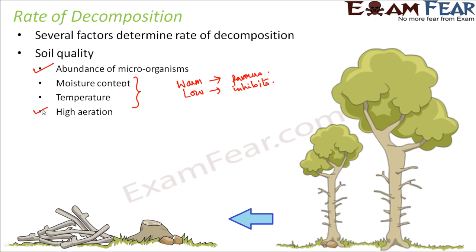Next is high aeration — the availability of air. Microorganisms need air to decompose aerobically; though some can undergo anaerobic respiration in the absence of air, aerobic respiration is favored. So high aeration favors decomposition and increases its rate. pH of the soil — which decides the acidic or basic nature of the soil — also plays an important role, because decomposition involves many chemical reactions, and if the pH is not suitable, the rate of decomposition may be affected.